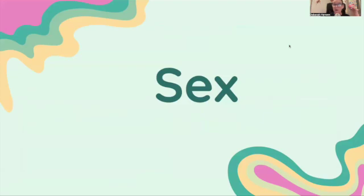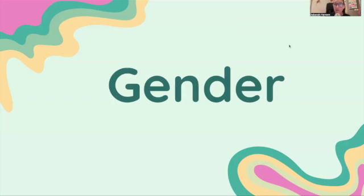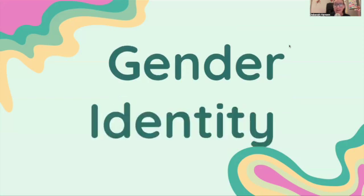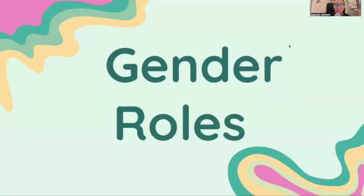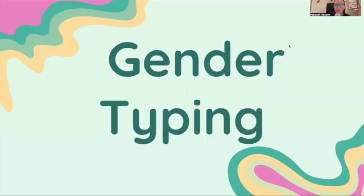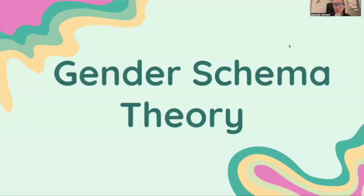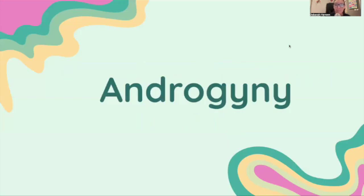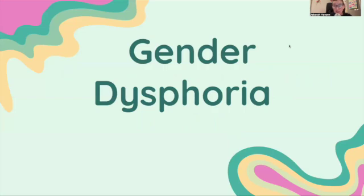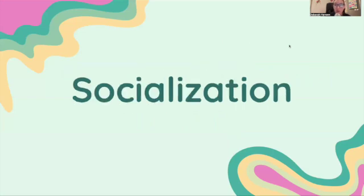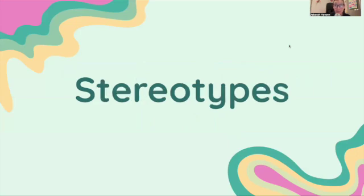Now let's review. Go through your flashcards and practice the definition and example for each term: sex, gender, gender identity, gender roles, gender typing, social learning theory, gender schema theory, androgyny, gender dysphoria, socialization, and stereotypes.